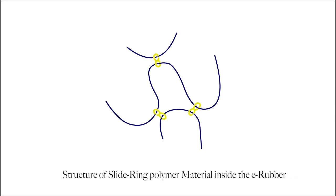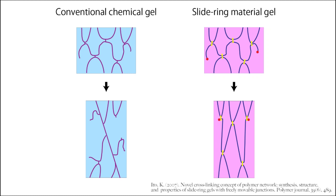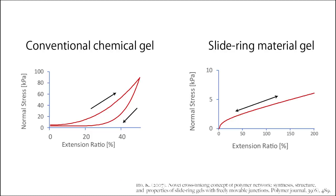The SRM inside the E-Rubber is a polymer material whose cross-linking point is H-shaped and can move freely. On the other hand, the cross-linking points of conventional polymer materials are fixed. As a result, SRM has unique characteristics of small hysteresis loss and small pre-stretching, unlike conventional polymer materials.